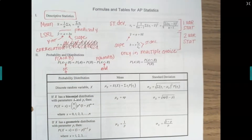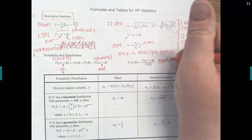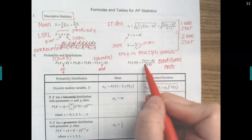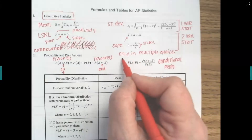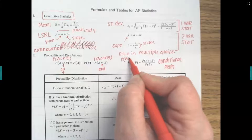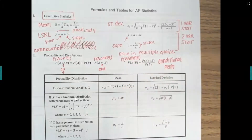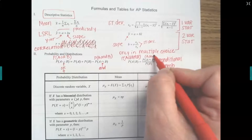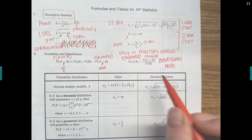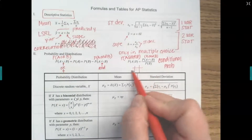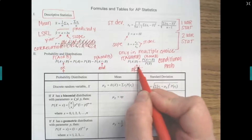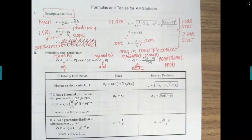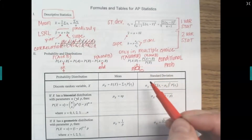Then we have our conditional probability formula. The probability of A given B has occurred equals P(A and B) divided by P(B). When looking at a two-way table, you find where A and B intersect divided by the table total. The formula is especially helpful when they give you only some pieces and you have to solve for the missing piece.